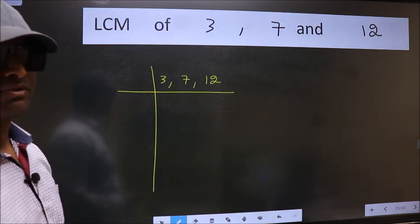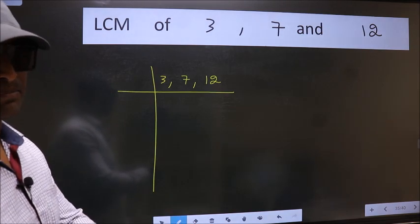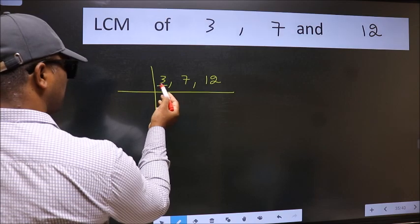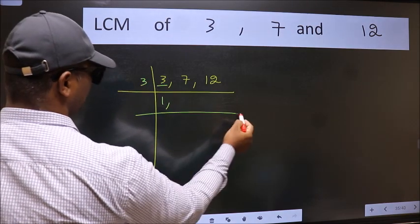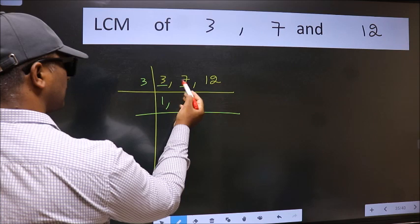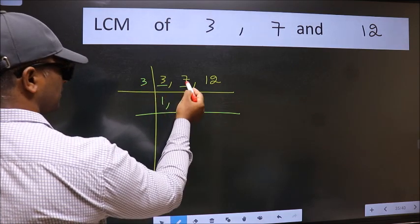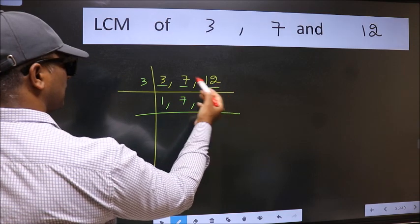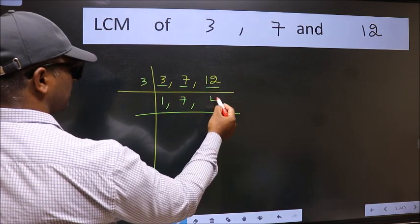Now we should focus on the first number which is 3 here. 3 is a prime number so 3 divides 3. The other number 7, not divisible by 3 so we write it down as it is. The other number 12, when do we get 12 in 3 table? 3 times 4 is 12.